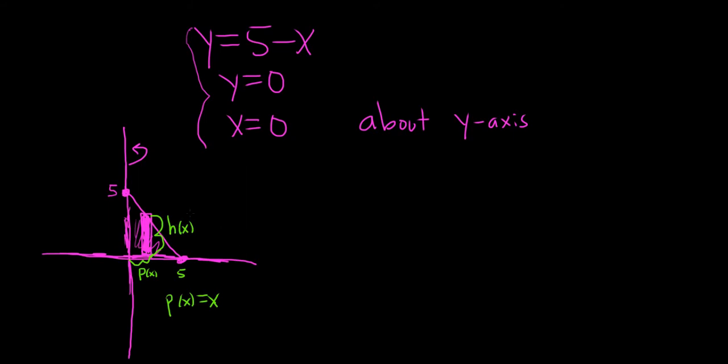And then h of x, sorry, depending on where you draw the rectangle, it's a distance of x. h of x is the height of the rectangle. In this case, it's just going to be 5 minus x. And that's it.